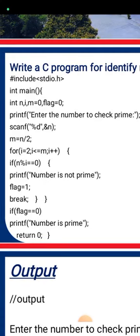If n mod i equals zero, then the number is not prime, and flag equals 1. If the number has flag set, break. If flag equals 0, print that the number is prime.